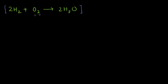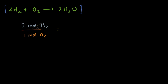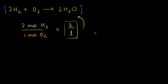In stoichiometry, you must have everything balanced. So in an ideal situation, you have two moles of hydrogen reacting with one mole of oxygen. We are comparing the mole ratios of our reactants — two moles of hydrogen to one mole of oxygen, which is a two-to-one ratio.